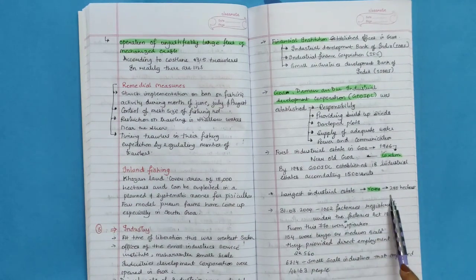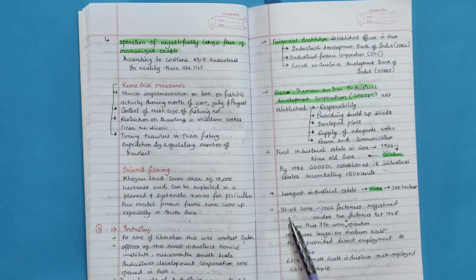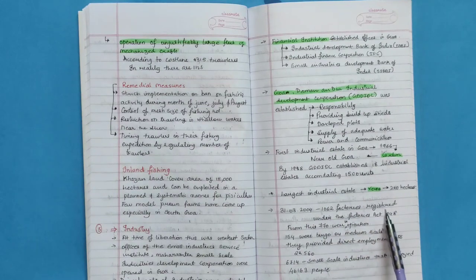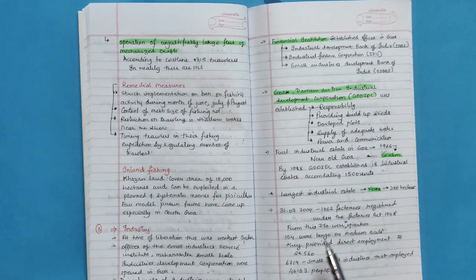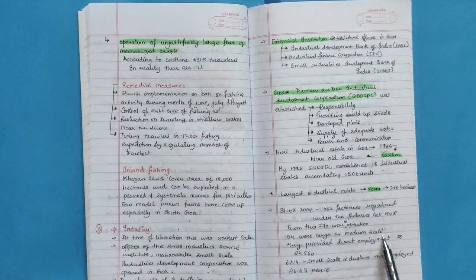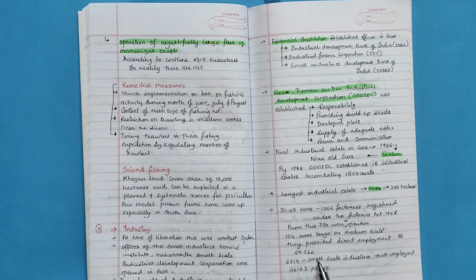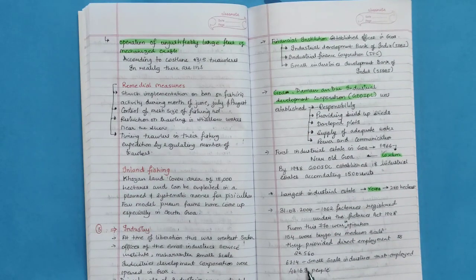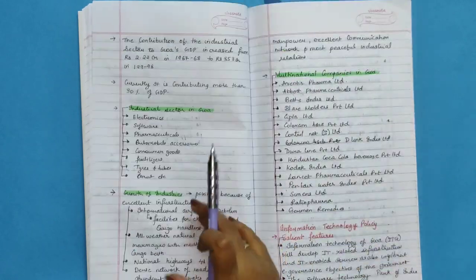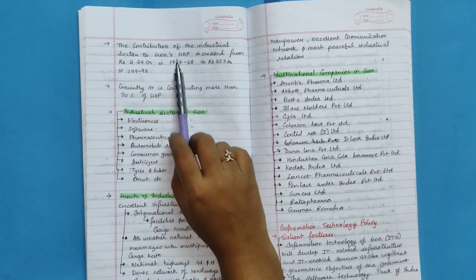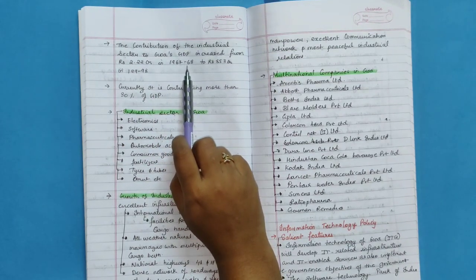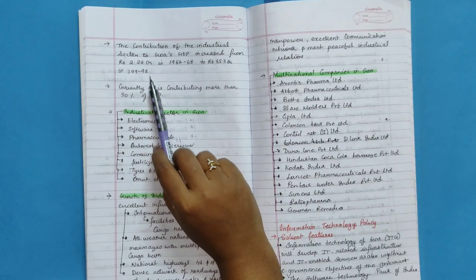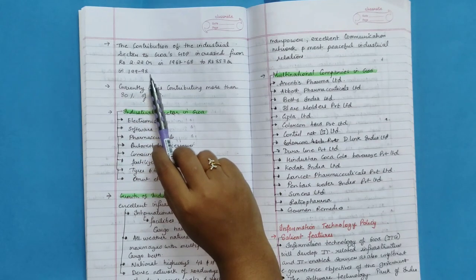Largest industrial estate is at Verna. It is 290 hectares. On 31st March 2004, 1,062 factories registered under the Factory Act, 1948. From this, 770 were in operation. 154 were large or medium scale. They provided direct employment to 22,560. 6,714 small-scale industries that employed 46,163 people. The contribution of the industrial sector to Goa's GDP increased from Rs. 2.22 crore in 1967-68 to Rs. 853 in 1997-98. Currently, it is contributing more than 30% GDP.